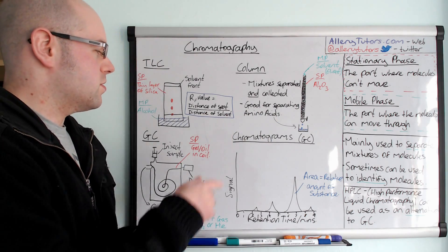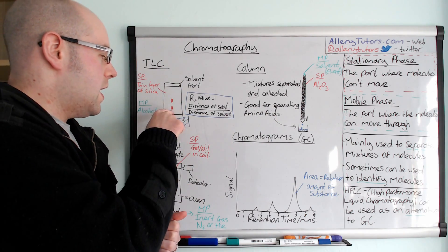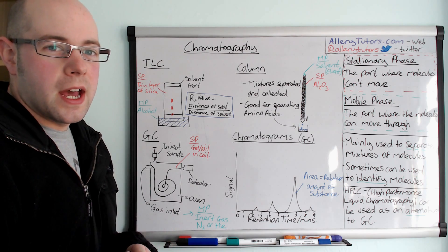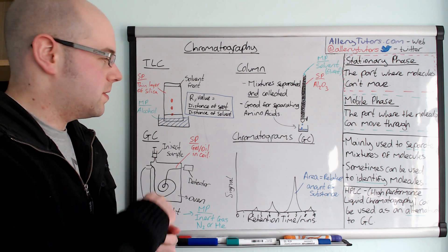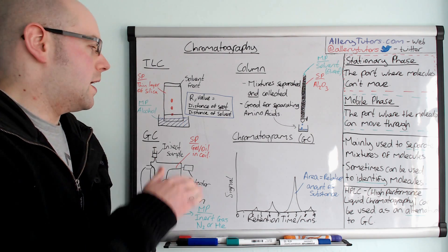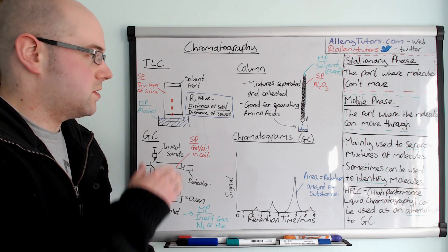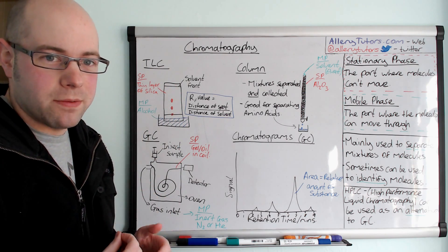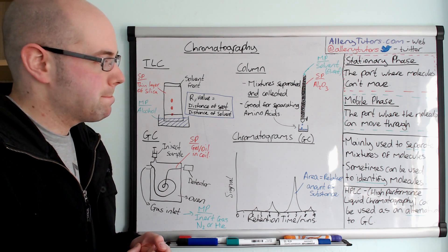It's also worth noting, just coming back to this one, that if the samples are not coloured it's very difficult to see the difference. So you can put a dye on the stationary phase and that would show up the spots, because sometimes it's very difficult to see them otherwise.